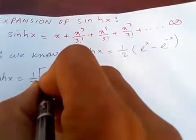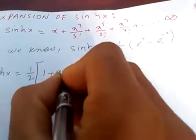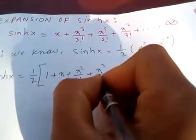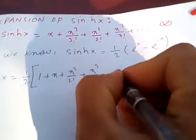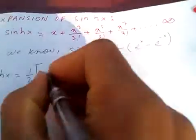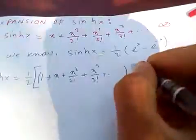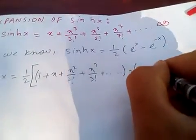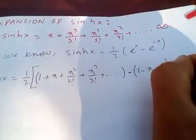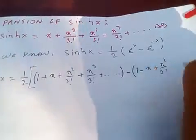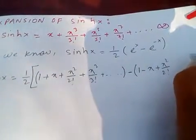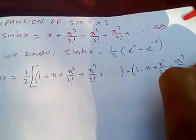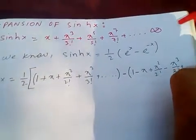Expanding eˣ, you will get 1 plus x plus x squared by 2 factorial plus x cubed by 3 factorial plus, and so on. Minus the expansion of e⁻ˣ, which gives 1 minus x plus x squared by 2 factorial minus x cubed by 3 factorial plus, and so on.